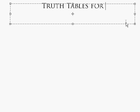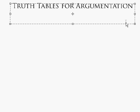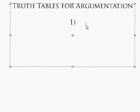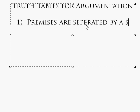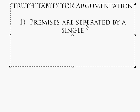Truth tables for argumentation. Here are some of the conventions. Number one: premises are separated by a single forward slash.